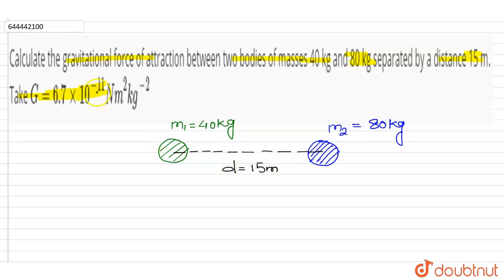We need to find the gravitational force of attraction. Here these bodies will attract each other. Let's suppose this is the force of attraction F. So m2 will be attracted by m1 by force of attraction F.